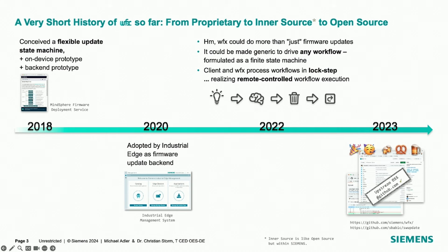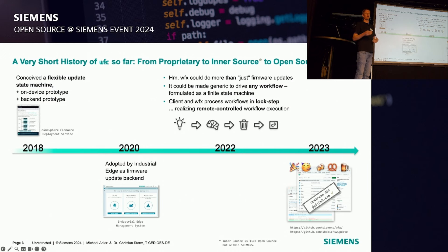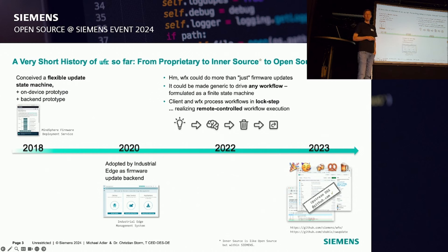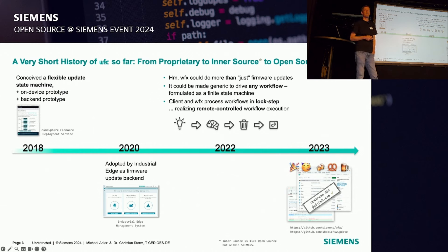We decided to make it simpler — strip it down to the very basics. This is what we did back in 2018. We had a flexible update state machine with an on-device prototype. Back then, it was still a prototype to showcase and test the idea. We also did the backend so that both can work in lockstep through this machine. Then in 2020, it was adopted by the Industrial Edge as a firmware update backend. Back then, it was still proprietary, and there were different implementations within Siemens with different feature sets.